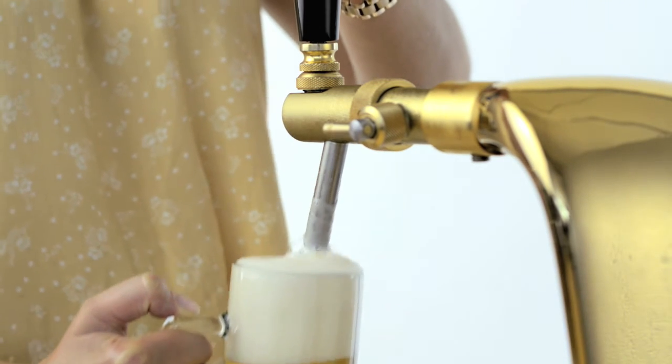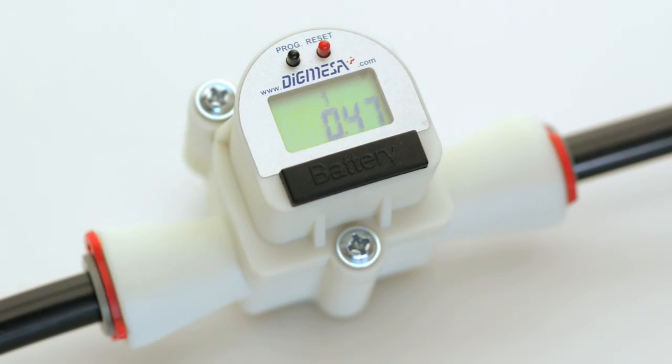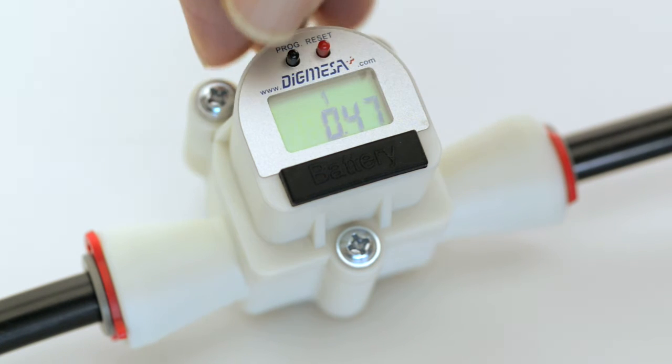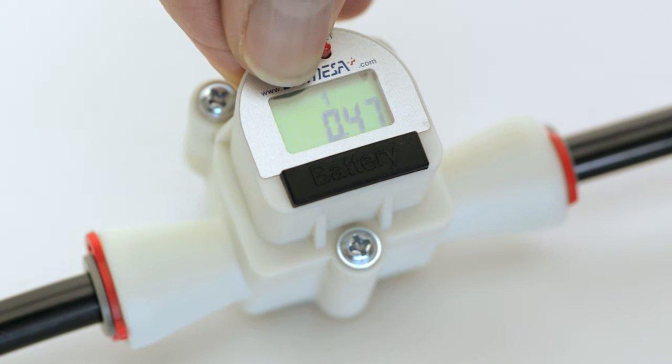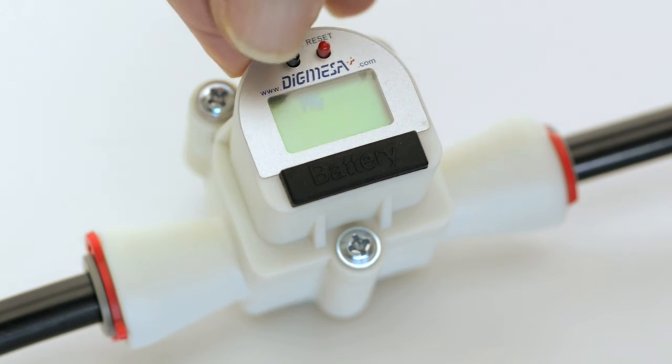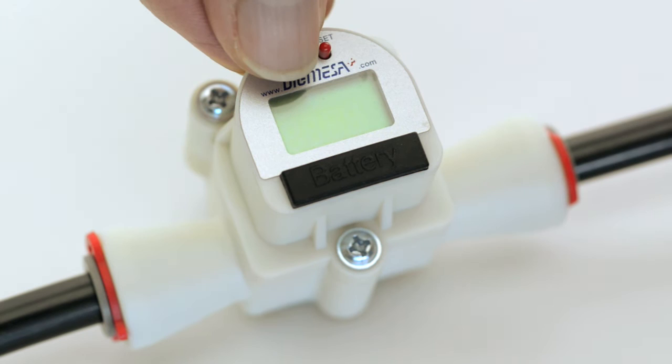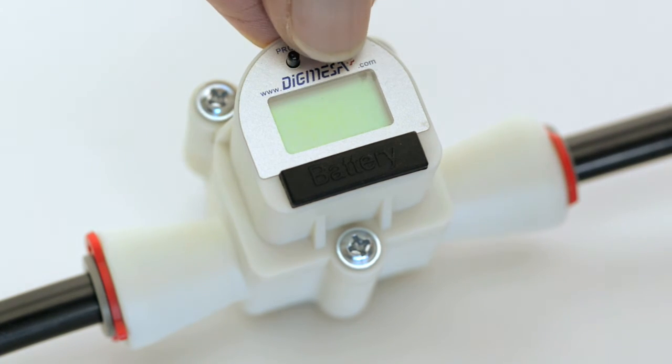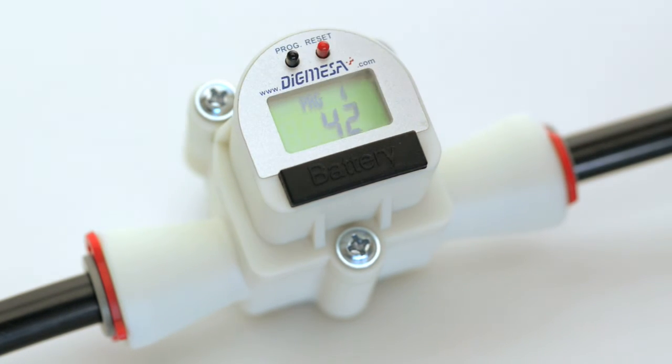To view or change the number of pulses per liter, proceed as follows. Hold the black program pin down until the message PRG flashes on the display, then release it. Now press the black program pin four times until the message PRG4 flashes. Then press the red reset pin once. PRG4 ceases to flash and the number of pulses per liter is displayed.